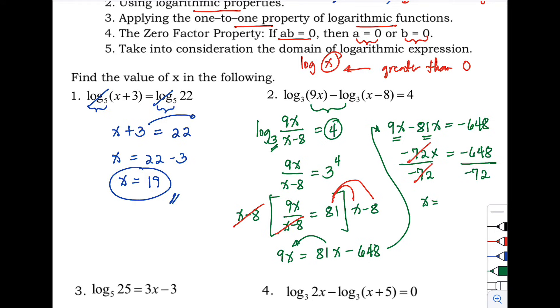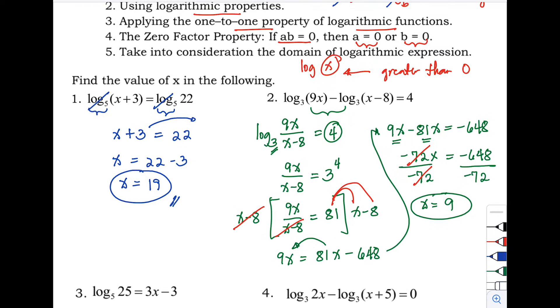So x = −648 / −72, which is positive 9. That is our final answer for number two.